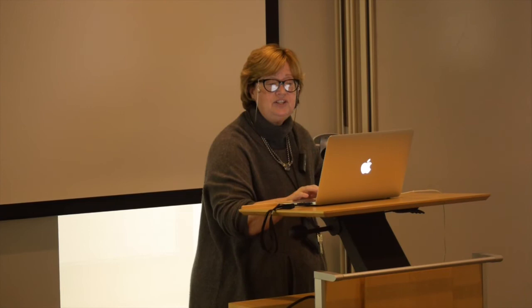This is the QQ plot for this PrediXcan gene-based test against the best gene-based test on the market today, Vegas. Vegas has almost no excess signal within a single GWAS — this is entirely the HLA signal — because regulation of genes can occur at some distance from them. Vegas is just using all the SNPs in a gene to come up with a gene-based assessment of association. This mechanistic approach has much more signal. You can take out the entire chromosome 6, since a lot is driven by the chromosome 6 HLA region, and we still have way more genes with much better evidence for association using this test compared to Vegas.